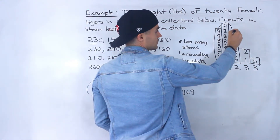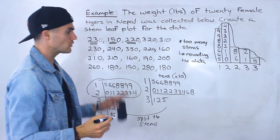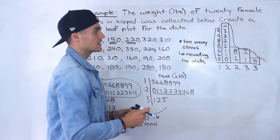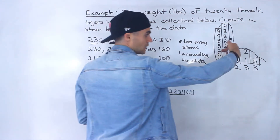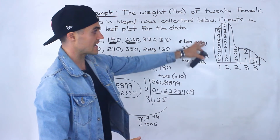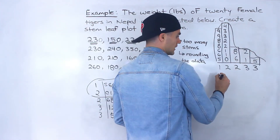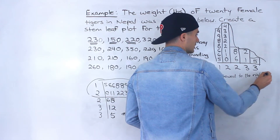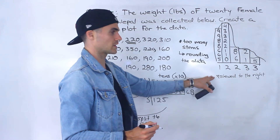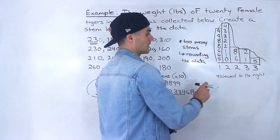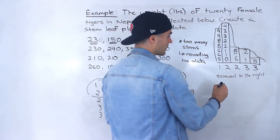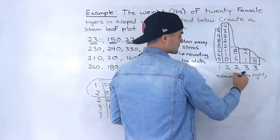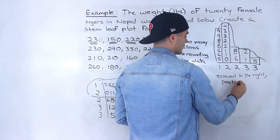This data has a particular shape. Remember the last example — most of the data was on the right side, and we said it was skewed to the left, or negatively skewed, because the tail was going to the left. Versus this data here — because the tail is extending out to the right, it is skewed to the right, also called positively skewed.